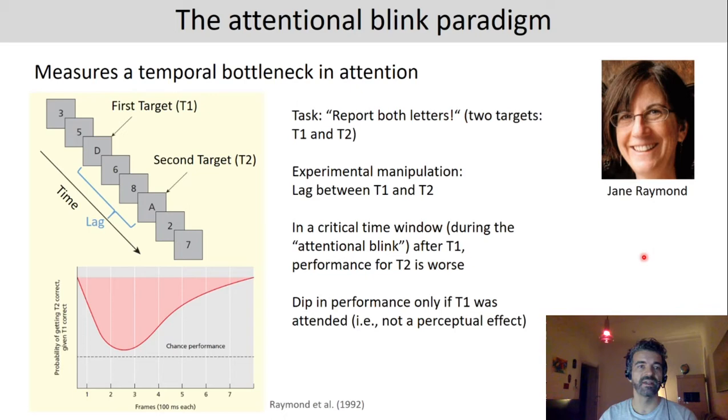This was tested with this task here. In this task people see a very fast succession of characters, digits and letters. There were only a few hundred milliseconds in between each of these and participants only had to report the letters. So the letters were the targets, the digits were the distractors. The critical manipulation here would be the lag between the first target and the second target, T1 and T2.